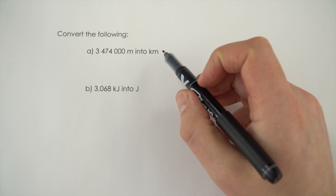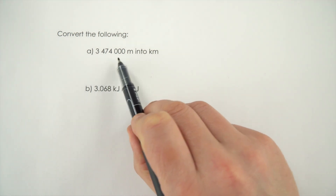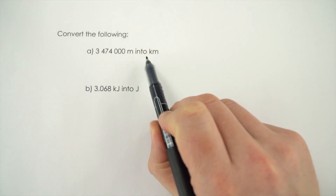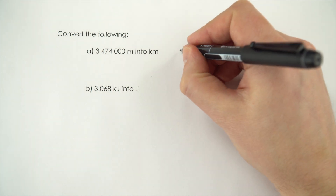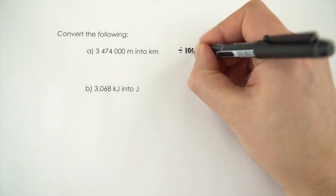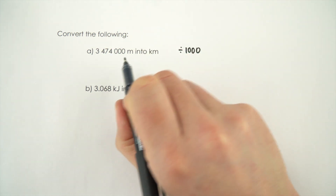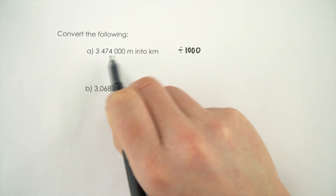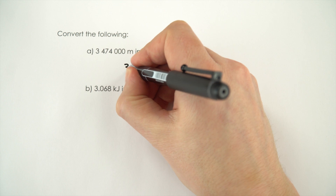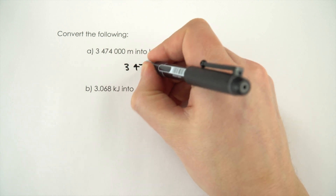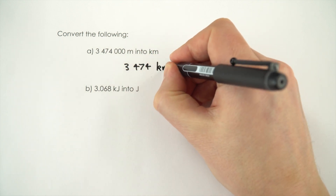In the first example we need to convert 3,474,000 metres into kilometres, and what we're going to be doing here is dividing this number by a thousand. So 3,474,000 divided by a thousand is 3,474 kilometres. So that's the way we're going from a small unit to a big unit.